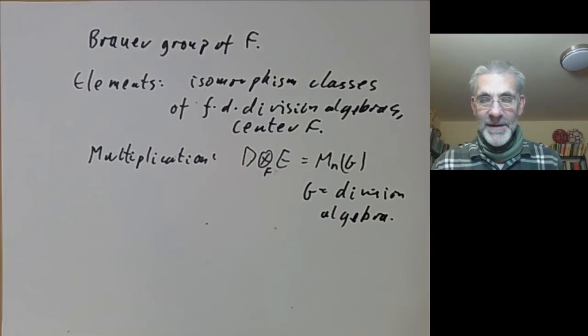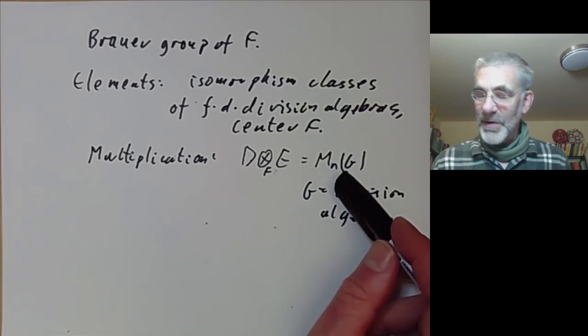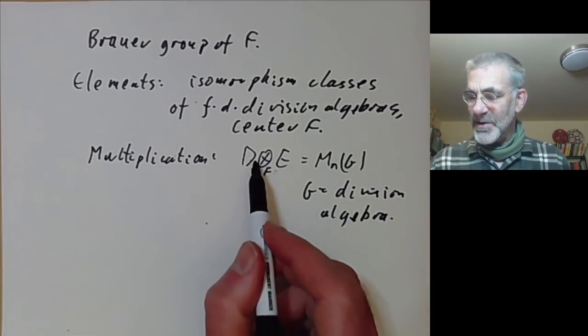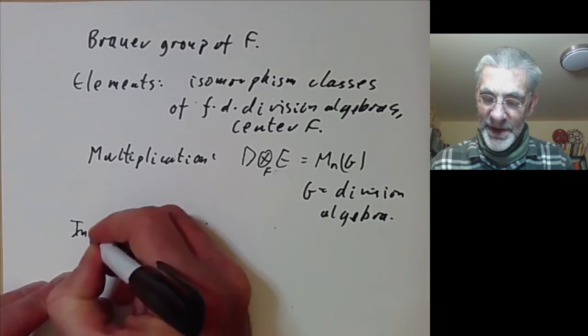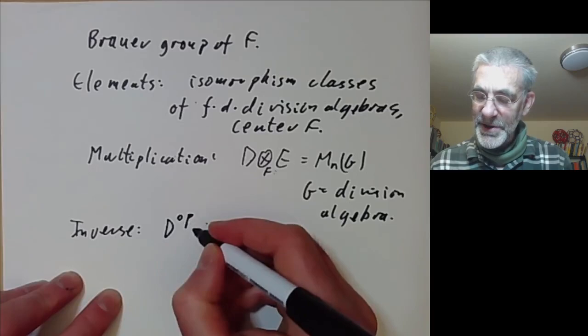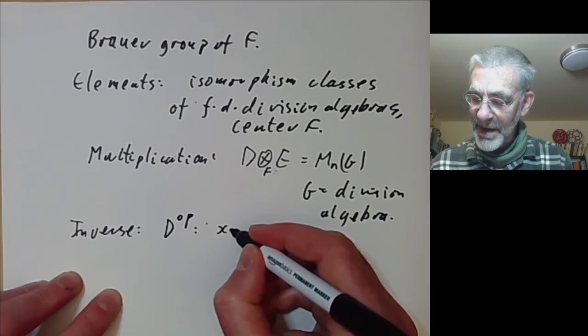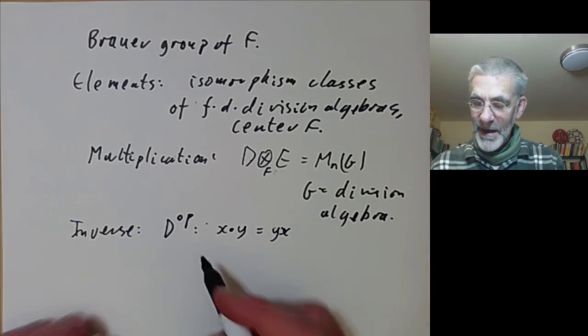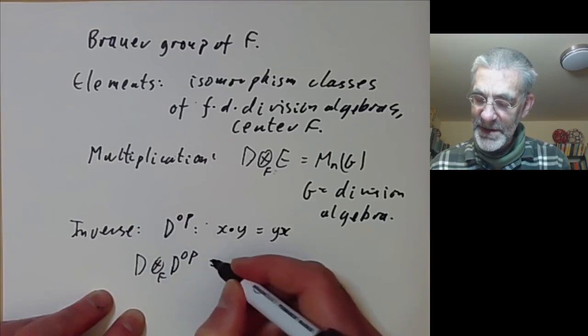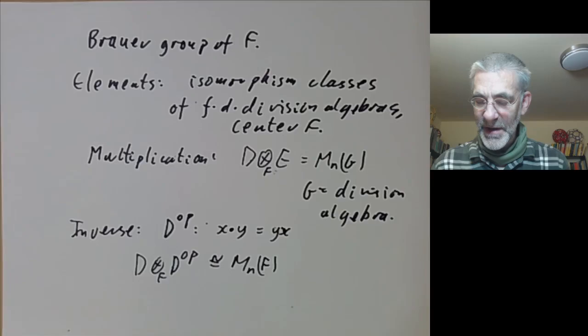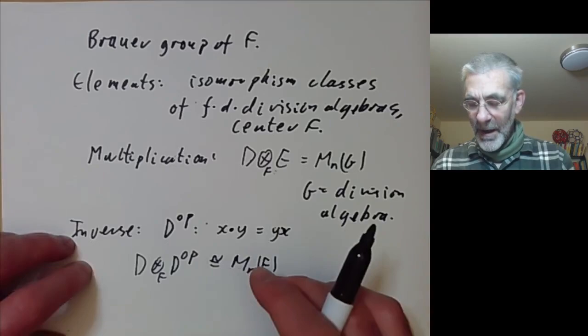And we define G to be the product of D and E in the Brouwer group. And you may look at this and think it's not actually even obvious that this product is associative, but that's not actually too difficult to check. And it's not at all obvious that this multiplication has an inverse. Well, the inverse is quite easy. The inverse of D is just D op, which is the same as D, except you define a new multiplication X, Y, to be the old product but reversed. And then you can easily check that D tensored with D op over F is isomorphic to a matrix algebra over F, where n is the dimension of D. And of course, the identity element is just the field F.